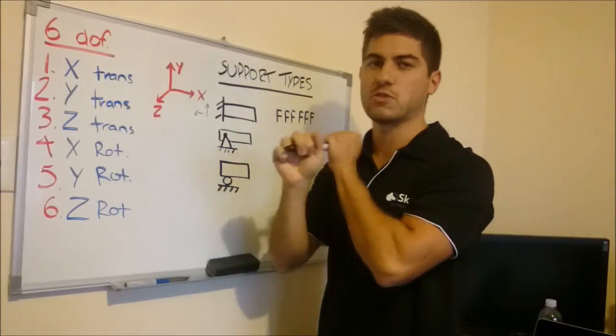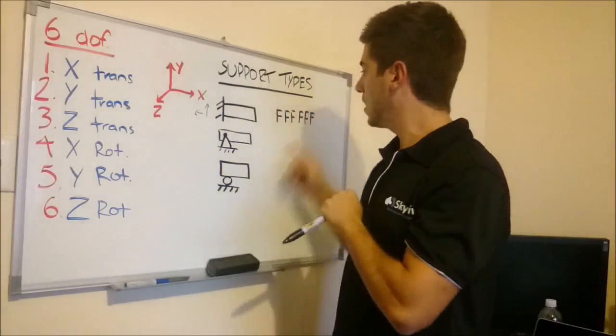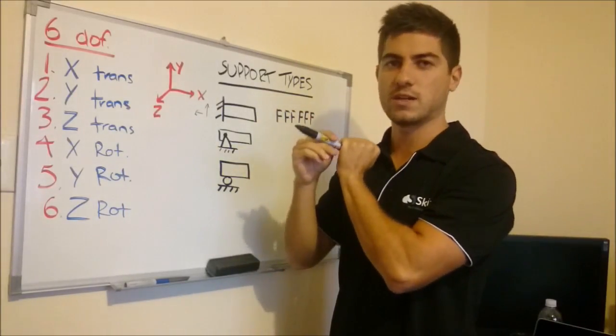So the first 3 F's say it doesn't translate, it does not move back or forth, and the last 3 F's means it does not rotate, it's fixed.